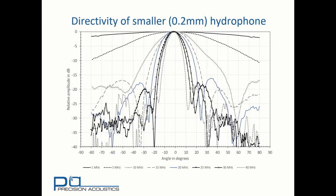In contrast, we'll consider a 0.2 mm needle hydrophone. Here we can see that even at 5 MHz, the fall off from the normal incidence amplitude is only 10 dB at plus or minus 80 degrees. And even the 40 MHz response is broader than the 10 MHz response for the 2 mm needle hydrophone.